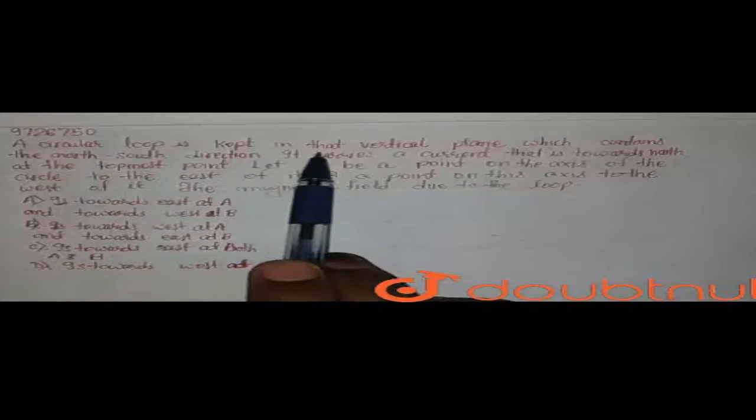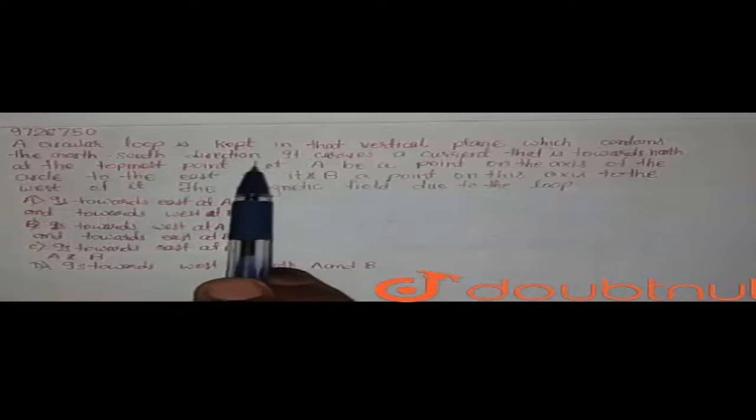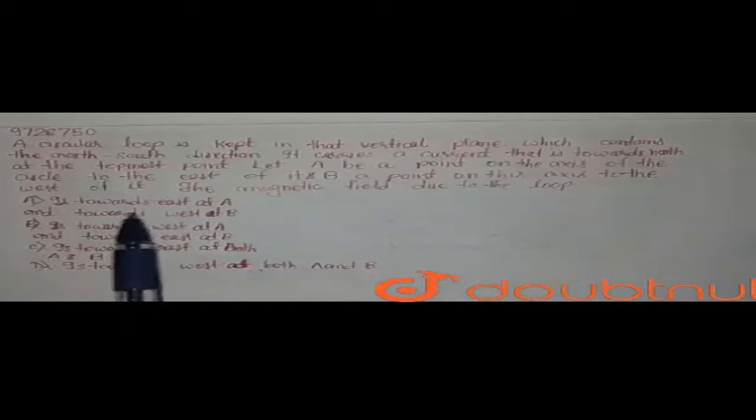Hello, the question is: a circular loop is kept in that vertical plane which contains the north-south direction. It carries a current that is towards north at the topmost point. Let A be a point on the axis of the circle to the east of it, and B be a point on this axis to the west of it. The magnetic field due to the loop is towards east at A.